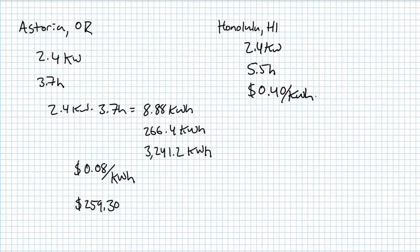On an average day, this 2.4 kilowatt array would experience 5.5 hours of peak sun. Therefore, every day on average, it would generate 13.2 kilowatt hours.